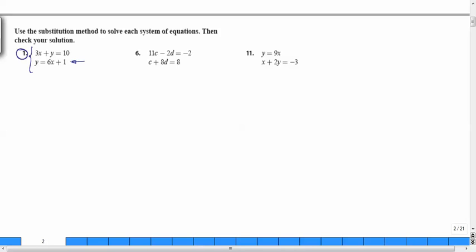Well, the second equation is already there. All I need to do next would be to plug 6x plus 1 into the first one wherever I have y. So now your first equation would be 3x plus (6x plus 1) equals 10. See that?